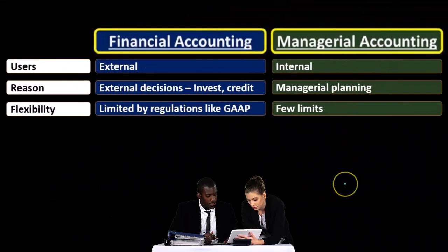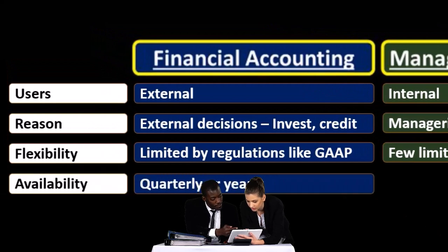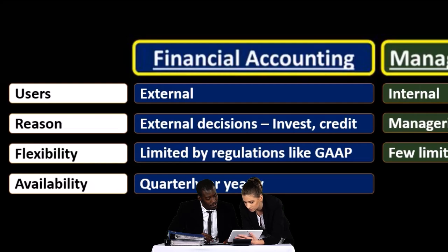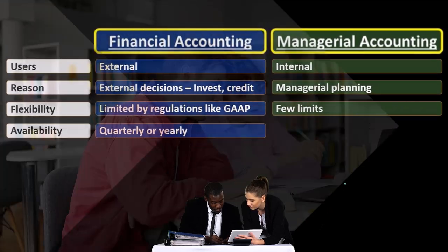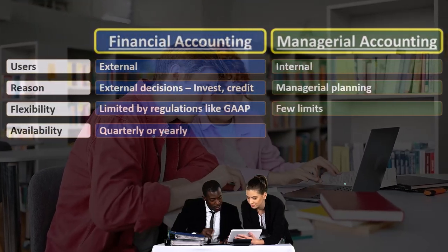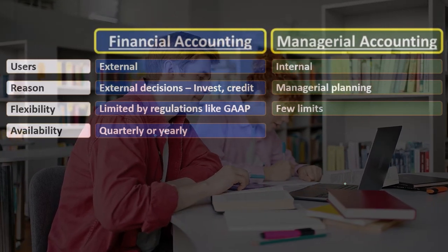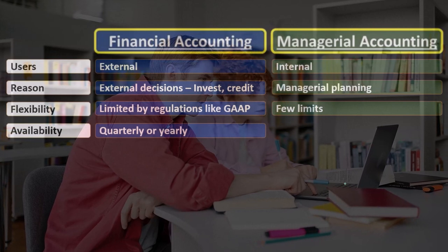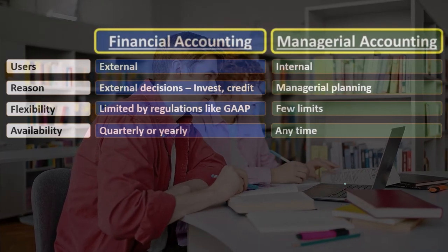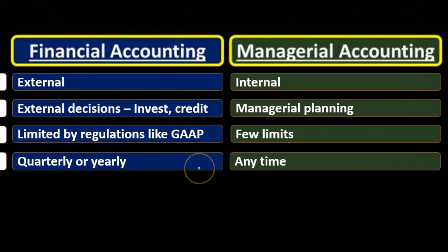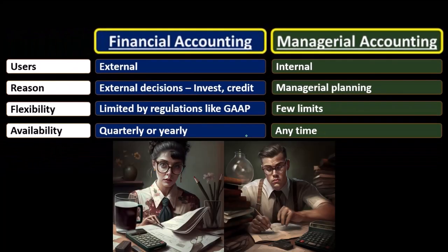We have a lot more flexibility in managerial accounting to run and format reports to support the best decisions. For data availability: financial accounting, particularly for publicly traded companies, goes through an audit. Data may only be available quarterly or annually, and numbers may not be finalized until some time after the period has ended due to the audit process.